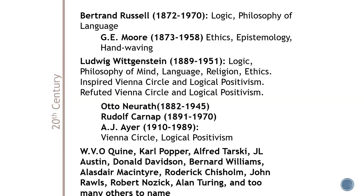Some members of the Vienna Circle were Otto Neurath, Rudolf Carnap, and A.J. Ayer. I've left off more names than I can imagine in the 20th century. If you're reading over some of these names, you'll notice some are on our reading list, which is why I've included them here so you can see when they were writing. There are also names that if you played Family Feud and said 'name a philosopher,' some people would come up with aren't really on this list, despite also being 20th century philosophers. I want to explain that a little bit.